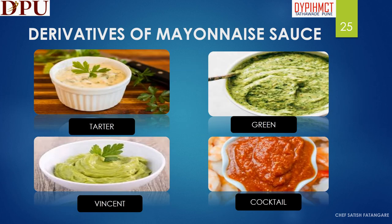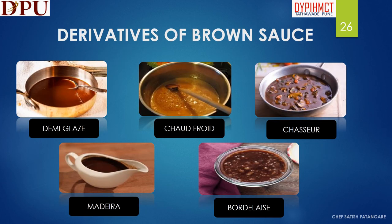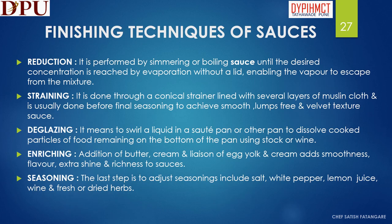In this slide we will learn about the derivatives of mayonnaise sauce. The derivatives of mayonnaise sauce are Tartar sauce, Green sauce, Vincent sauce and Cocktail sauce. In this slide we will discuss about the derivatives of brown sauce. The derivatives of brown sauce are Demi-glace, Chaudfroid, Chasseur, Madeira and Bordelaise.